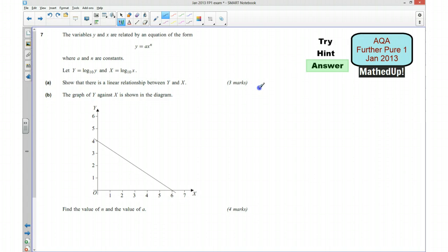For part A, we need to show that there is a linear relationship between Y and X. So we said that we were going to take the log of both sides of this equation. Taking the log of this side, I'm going to have log Y. We know that the base is 10, is equal to log AX to the power of N.